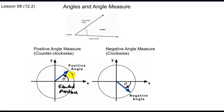And we rotate in a positive angle measure, that means we're rotating counterclockwise. If we start in the standard position and we rotate in a clockwise direction, that's known as a negative angle.